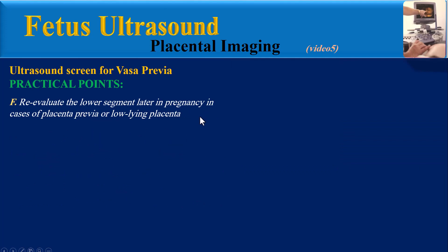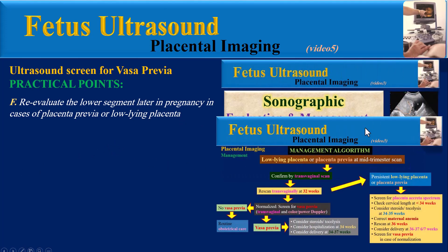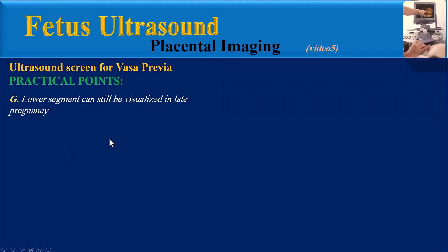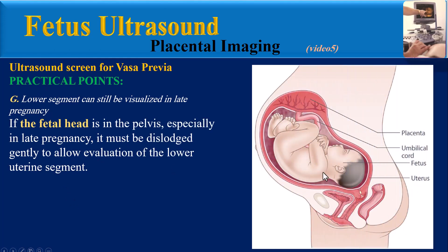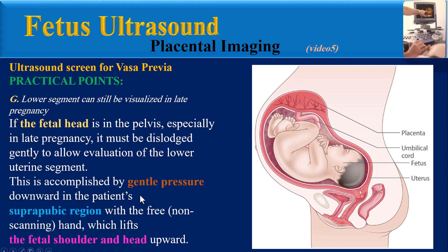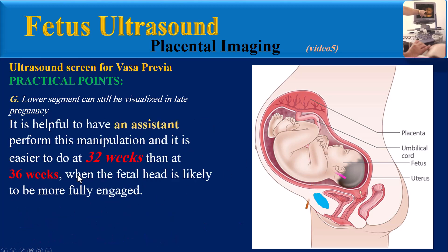Another practical point: reevaluate the lower segment later in pregnancy in cases of placenta Previa or low-lying placenta. In video 3, a management algorithm was presented and the follow-up approach in these cases is well defined. Also, the lower segment can still be visualized in late pregnancy. If the fetal head is in the pelvis, it must be dislodged gently by applying gentle downward pressure in the patient's suprapubic region with the free hand, which lifts the fetal shoulder and head upward. This is easier to perform at 32 weeks gestation than at 30 weeks.